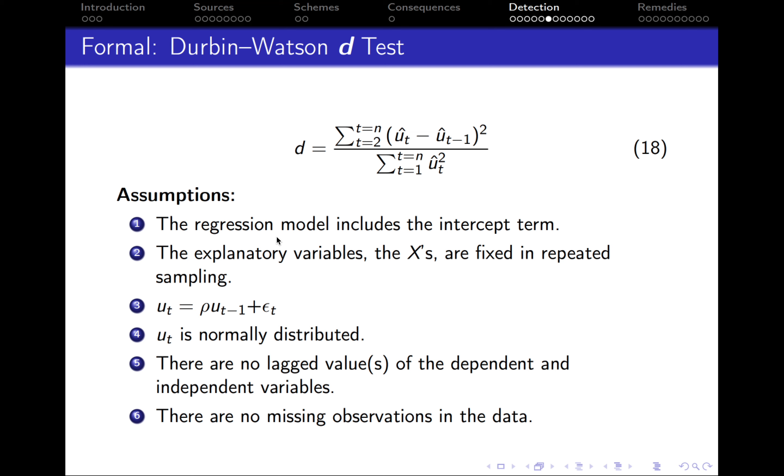So first of all, your regression model must include the intercept term. If there is no intercept term in your model, the D test cannot be used. The explanatory variables, the X's, they must be fixed in repeated sampling. In other words, they must be constant. But this is an assumption that I think is quite easy to meet because all of the time our X's are fixed.